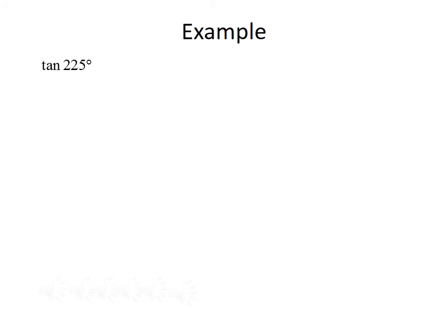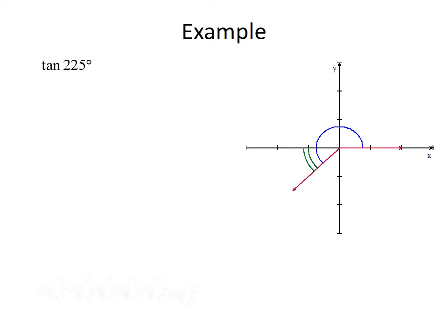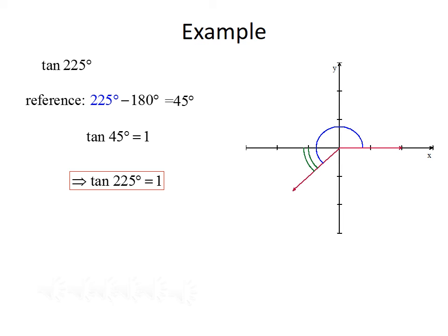For our next example, we want to find the tangent of 225 degrees. Sketching 225 degrees, it lies just past the left-hand x-axis in quadrant 3. The reference angle is 225 minus 180 equals 45 degrees. The tangent of 45° equals 1. Since tangent is positive in Q3, the tangent of 225 degrees is positive 1.